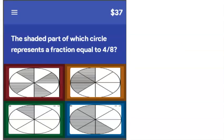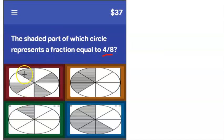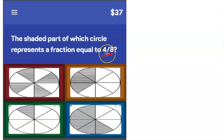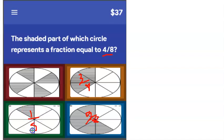Which shaded circle represents a fraction equal to four eighths? Looking at the circles — they all appear to be divided into eight parts. Now checking which one has four parts shaded: the first has three eighths, the second has five eighths, the third has one eighth. The fourth has four parts shaded — even though they're not all together, it still equals four eighths because four are shaded. Pieces do not have to be side by side to equal four eighths.